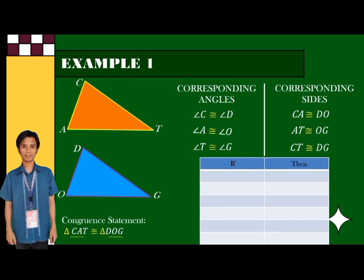For example, if measure of angle C is 81 degrees, the measure of angle D is also 81 degrees.